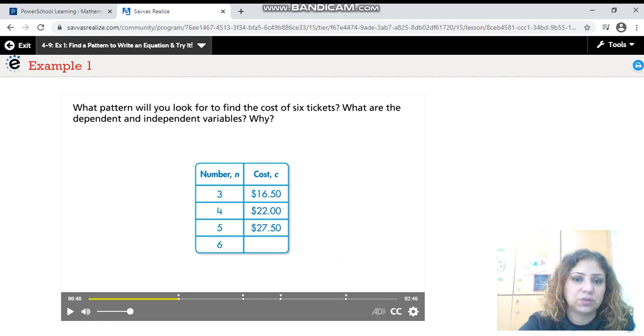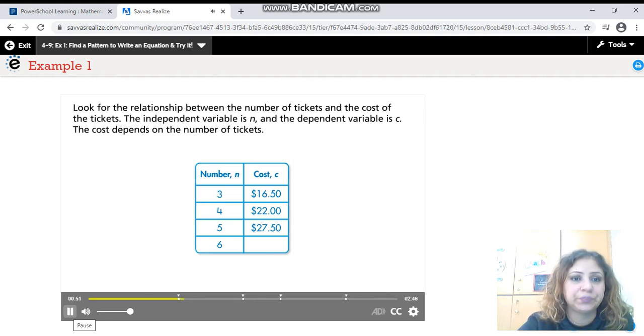Three tickets cost $16.50. Four tickets cost $22. Five tickets cost $27.50. Look at this pattern. Look at the numbers. The numbers are increasing as you see. And the relationship between the number of tickets and the cost of the tickets.